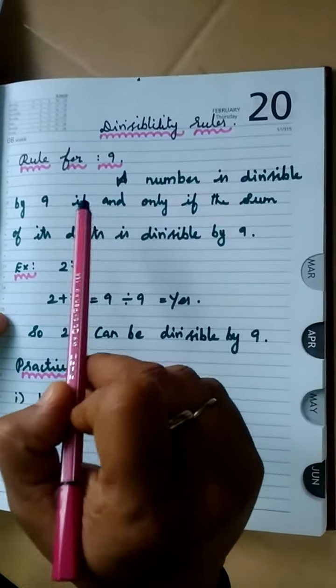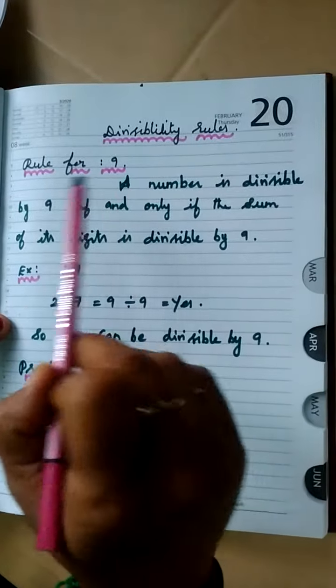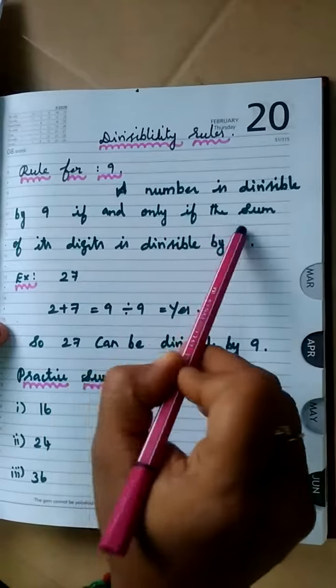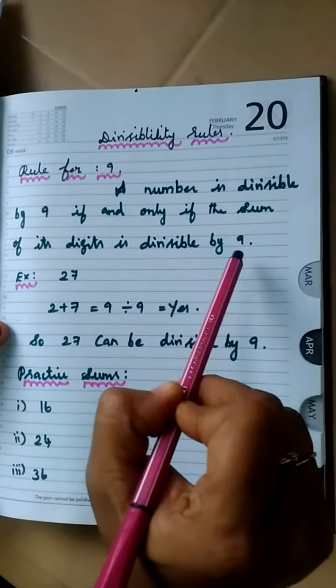Which is nothing but the same rule for applying rule for 3, the same rule for 9. A number is divisible by 9 if and only if the sum of its digits is divisible by 9.